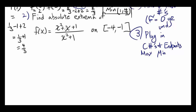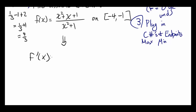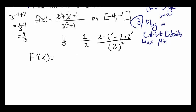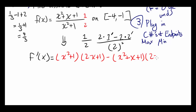Problem 2: Find absolute extrema of f(x) = (x² + x + 1)/(x² + 1) on [-4, -1]. We differentiate using the quotient rule: derivative of (f₁/f₂) = (f₂·f₁' - f₁·f₂') / f₂². Here f₁ = x² + x + 1 and f₂ = x² + 1. So f prime = (x² + 1)(2x + 1) - (x² + x + 1)(2x), all over (x² + 1)².